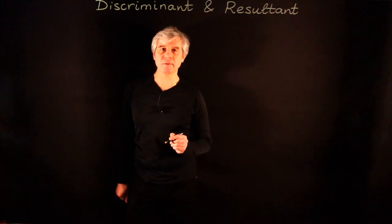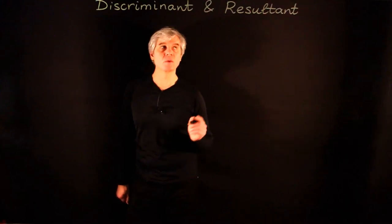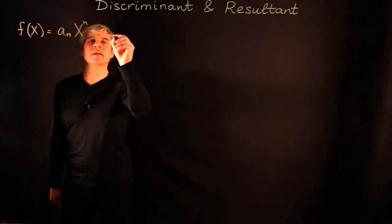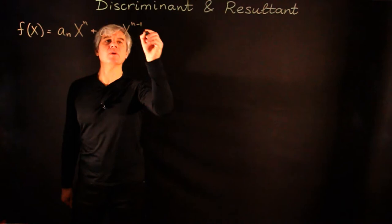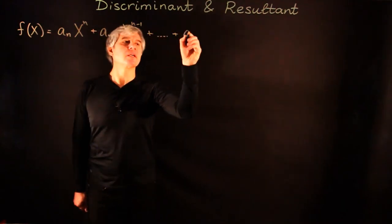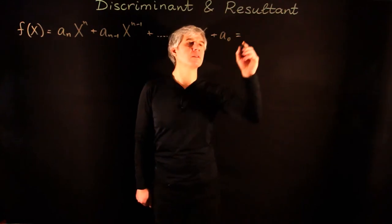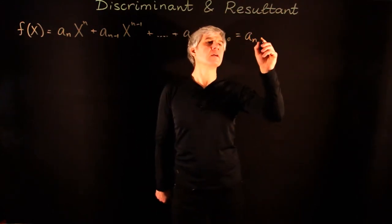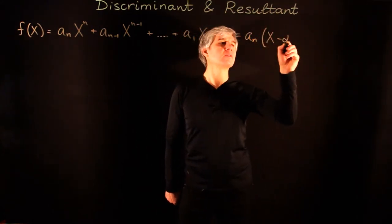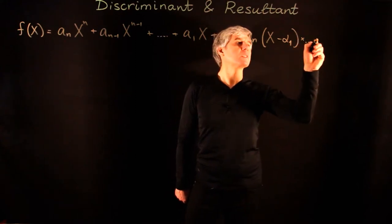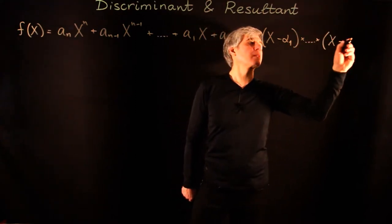Let us present a method for computing the discriminant using the resultant. We begin with two polynomials. f(x) is a_n x^n + a_{n-1} x^{n-1} + ... + a_1 x + a_0, and we factor it as a_n times (x - α_1)···(x - α_n).